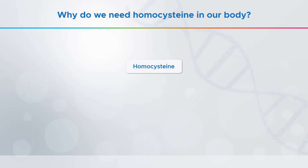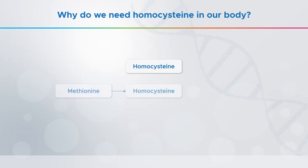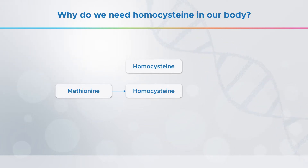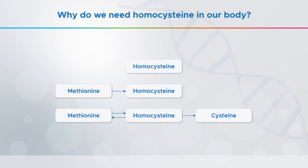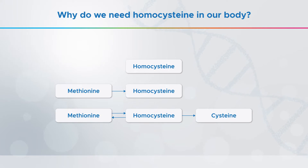Homocysteine is an amino acid that the body produces from another amino acid called methionine. Normally there's very little homocysteine circulating in our body, as it's quickly converted into another amino acid called cysteine, or it gets recycled back into methionine, ready to be reused to build other proteins.